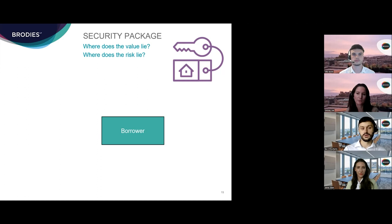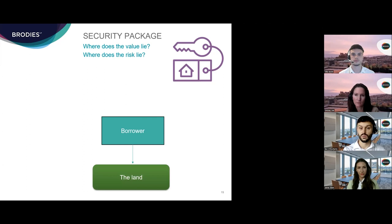Security can be taken over all types of asset and asset classes, whether tangible such as a plot of land, or intangible such as rights under contract, but the nature of the security will vary depending on the type of asset in question. Fixed security attaches to a specific identifiable asset such as a plot of land, while floating security hovers or floats above an asset or pool of assets before becoming fixed upon the occurrence of certain events. This is something we'll discuss later in relation to floating charges.